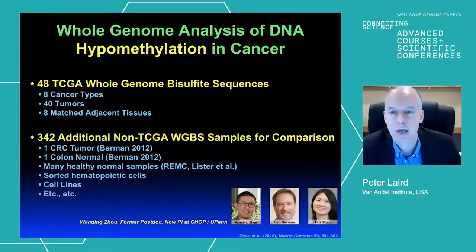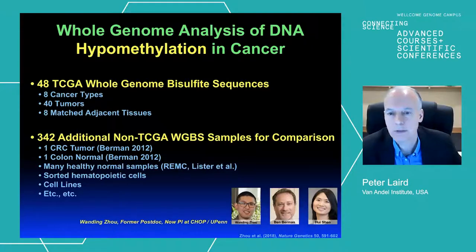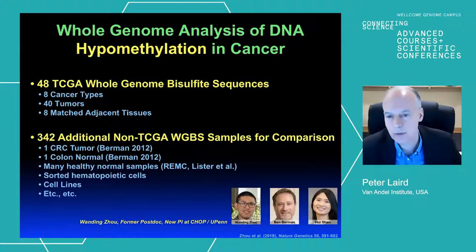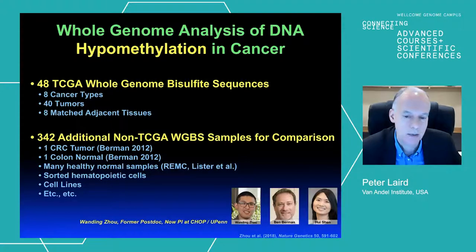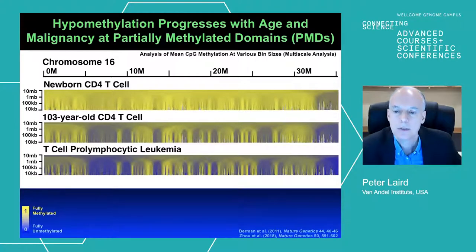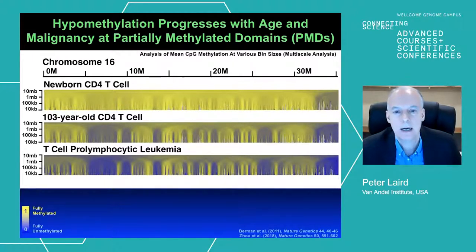I'm going to start with the hypomethylation, the loss of methylation, and go back to a paper we published two years ago where we looked at 48 TCGA whole genome bisulfite sequencing datasets, including matched adjacent tissues, and 342 additional non-TCGA whole genome bisulfite sequencing samples used for comparison. This was a collaboration with Ben Berman and Hui Shen, with Wang Ding Zhou—a postdoc shared by Hui Shen and myself at the Van Andel Research Institute, now a PI at CHOP and UPenn.